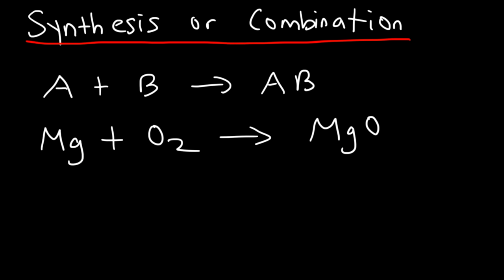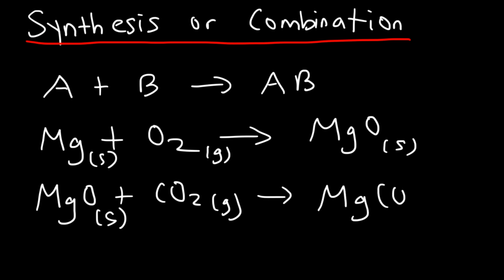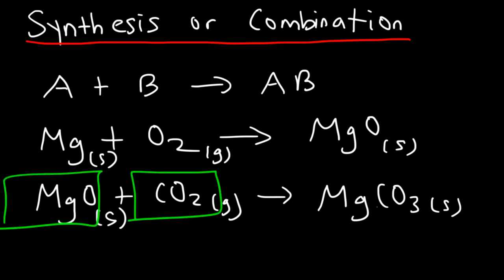Note that these reactions are unbalanced — the focus here is on identifying the type of reaction. Another example of a synthesis reaction: if we have magnesium oxide and react it with carbon dioxide gas, it can form magnesium carbonate. Here a small compound reacts with another small compound to form a more complex larger compound. That's a combination reaction.